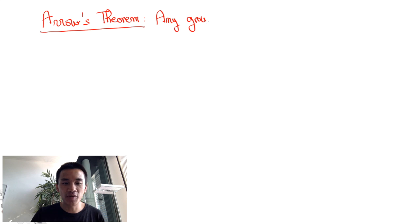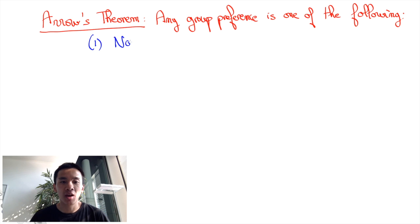Slightly more precisely, when there are at least three alternatives, any group preference must be at least one of the following: 1. Non-unanimous, which means that the group preference may differ from all individuals' preferences even though all these preferences are actually the same.